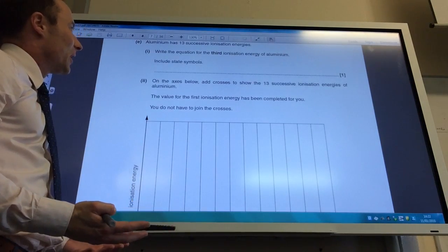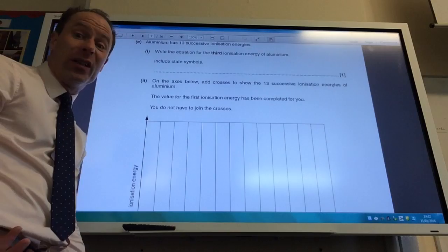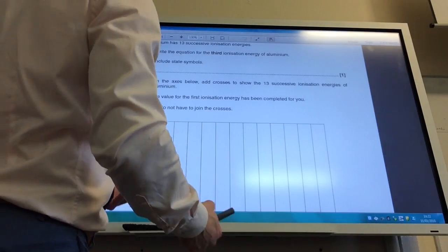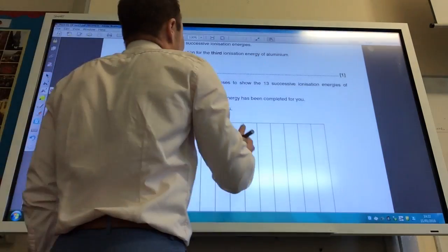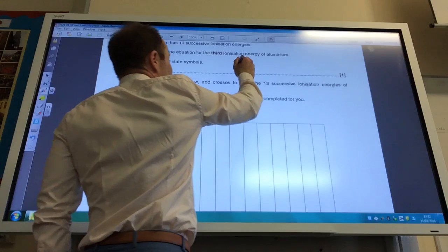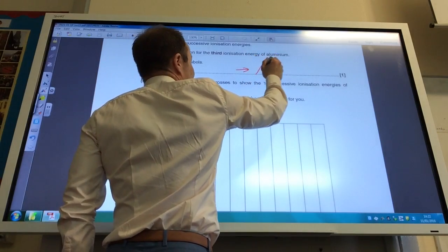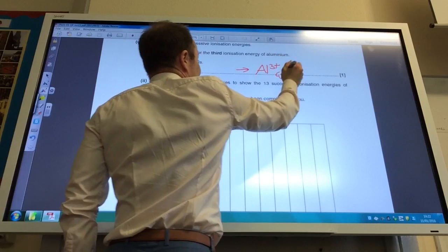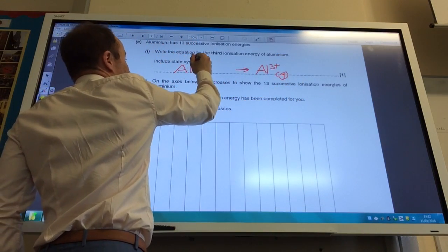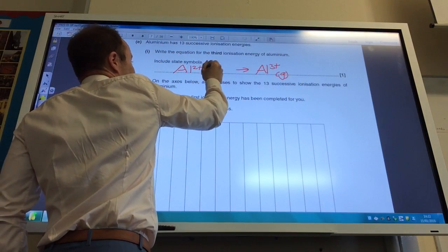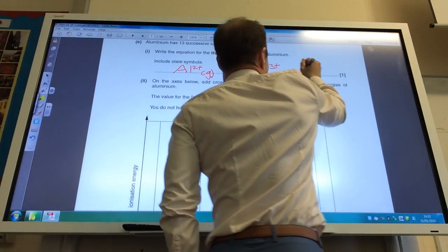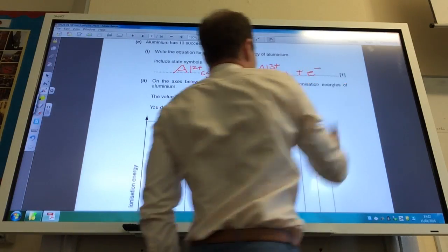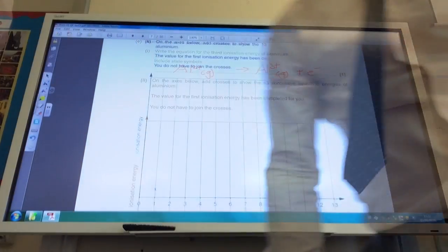Aluminium has 13 successive ionisation energies because it's got 13 electrons. Write the equation for the third ionisation energy of aluminium. If it's the third, remember it means it's forming Al3+, and that's in the gaseous state, so it's going to be Al2+ in the gas becomes Al3+ plus an electron.